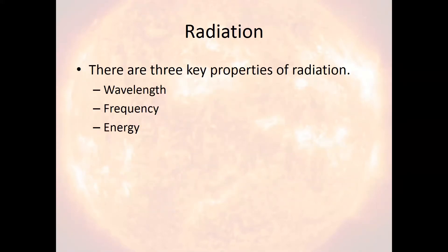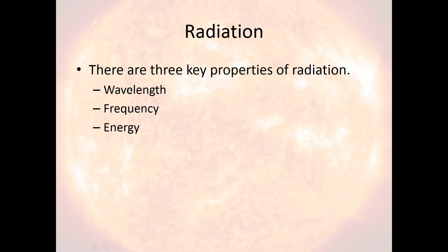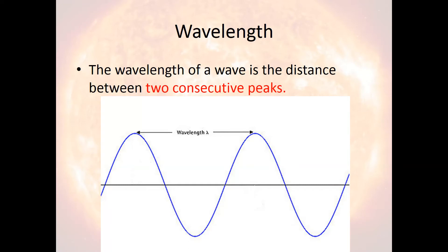There are three key properties of radiation: wavelength, frequency, and energy. Wavelength is really the most important and key defining property — in fact, frequency and energy are simply determined by the wavelength. If you were to zoom in on a beam of radiation, you would see something called a sine wave. A sine wave uniformly goes up, peaks, goes down, bottoms out, goes back up and peaks again, and so on. The distance between any two consecutive peaks is what we call the wavelength.